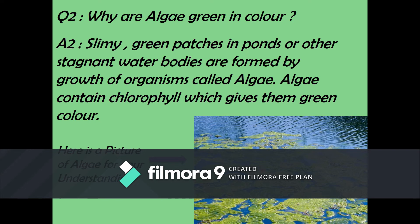Why are algae always green in color? Algae are the slimy green patches found in ponds or other stagnant water bodies. They are formed by the growth of organisms called algae, especially visible in ponds. Algae contain chlorophyll, which gives them their green color.